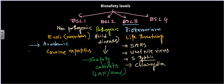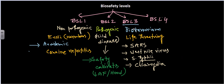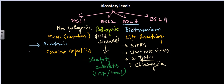In BSL 3 laboratories, you need to wear gloves, masks, and handle everything under safety cabinets or hoods. There must be special arrangements — filtrated exhaust air must be discharged outside after filtration. Access to the laboratory is restricted to a few personnel only. It is a progressively more dangerous level requiring strict safety controls.